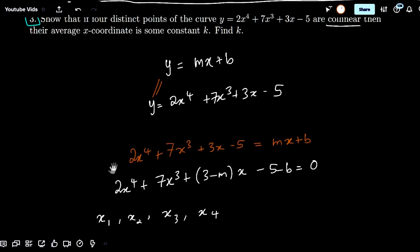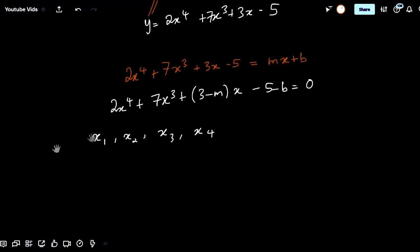If you haven't seen Vieta's formulas before, consider the general quartic equation with 4 roots: y equals a times x minus x1, times x minus x2, times x minus x3, times x minus x4.